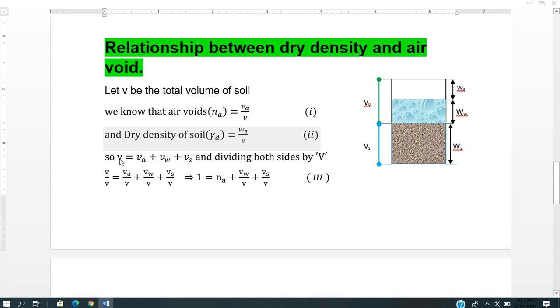Total volume equals volume of air plus volume of water plus volume of solid. Dividing both sides by total volume, we get 1 equals Na plus Vw/V plus Vs/V, where Na equals volume of air by total volume, Vw is volume of water, and Vs is volume of solid by total volume.